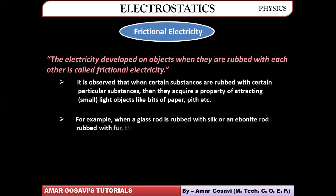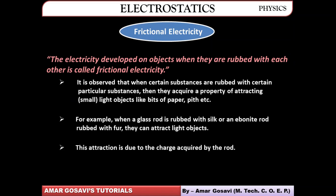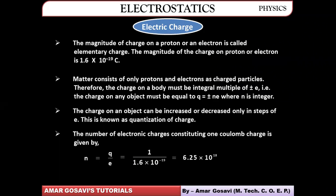Specific examples of frictional electricity: when a glass rod is rubbed with silk cloth, or when an ebonite rod is rubbed with fur, they start attracting lighter objects. This happens because of the charge acquired by the rod.